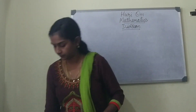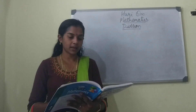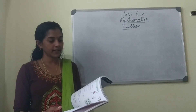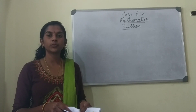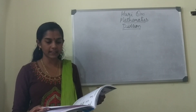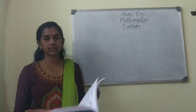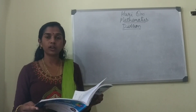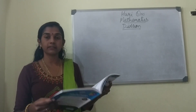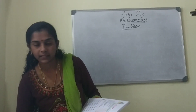Hari Om children. In the division chapter we learned different methods of dividing numbers. First we learned repeated subtraction, grouping, sharing, dividing on the number line, and long method without remainder and long method with remainder. So today let us revise all the methods once again.